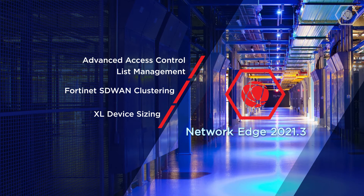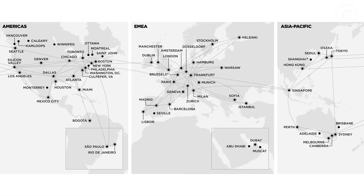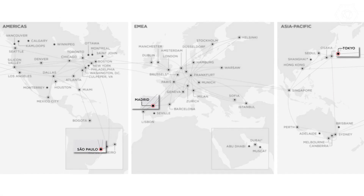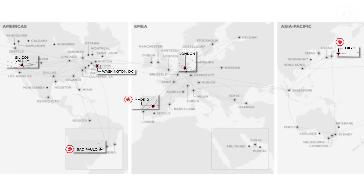Additionally, we will be adding firewalls from Cisco as new Network Edge devices. Network Edge has recently been deployed in Madrid, Tokyo, and Sao Paulo. We've also added additional capacity in DC, with Silicon Valley and London additional capacity coming soon.